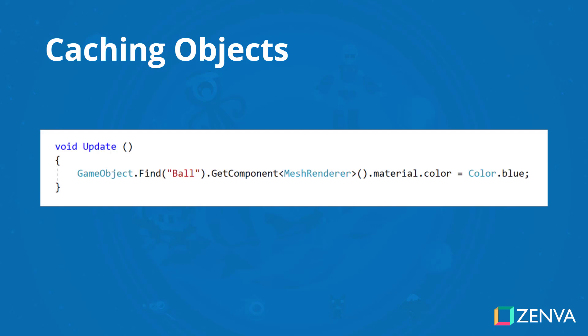Whenever you want to access an object inside of Unity, you might think that the gameObject.find function can just easily find an object that way, or getComponent. Here in this example, I'm finding the object ball and accessing the mesh renderer component to change the colour to blue every single frame.